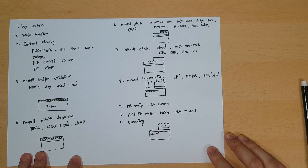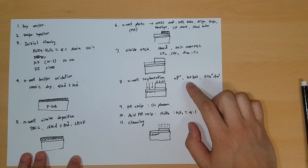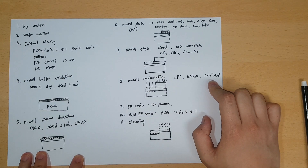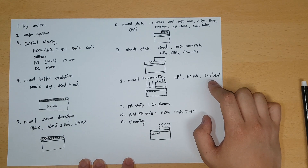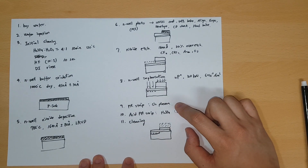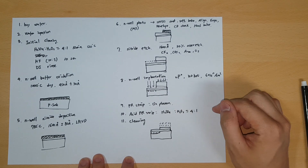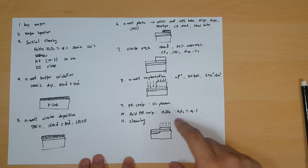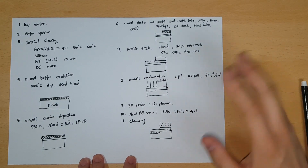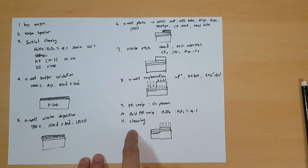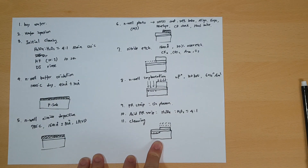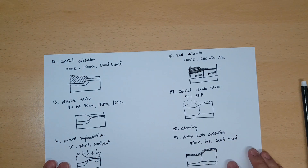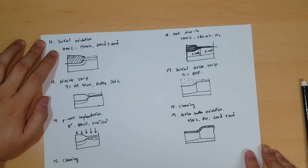For the N-well implant you use phosphorus at 120 kiloelectron-volts with a specific concentration. Next, step nine and ten, you do the PR strip: first with O2 plasma, then an acid PR strip for cleaning to remove leftover polymer, followed by a cleaning step. This gives us the product at step 11.